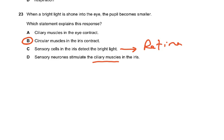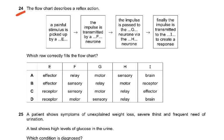Question 24: The flowchart describes the reflex action. A painful stimulus is picked by E, so E is a receptor. The impulse is transmitted by F neuron - sensory neuron. The impulse is passed to the G neuron by the H neuron, so H is the relay neuron and G is the motor neuron. Finally the impulse is transmitted to I to create a response - that is an effector. Effectors can be either muscles or glands, nothing else.